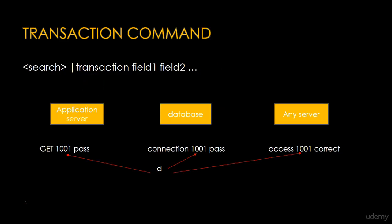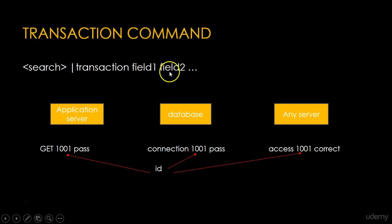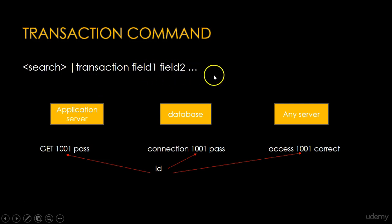Now I am going to talk about the Transaction Command. For the Transaction Command, you need to write a search, then pipe, then transaction, and a field list. You can give multiple fields here — field 1, field 2, field 3, etc.